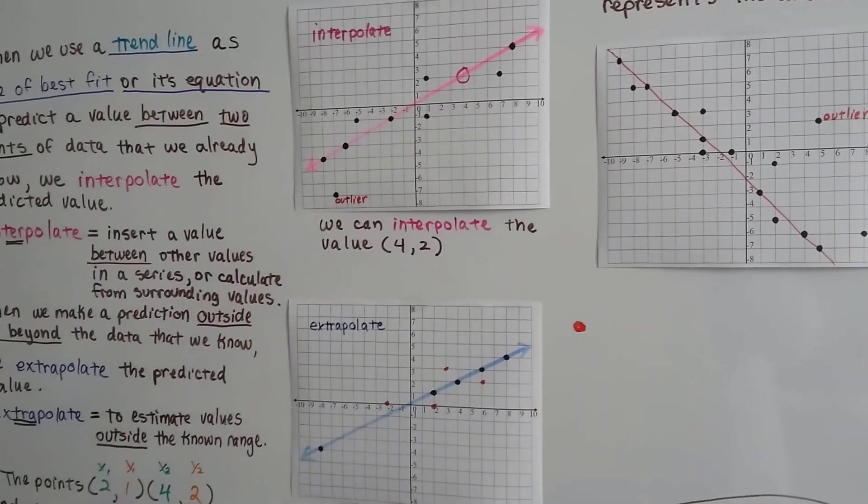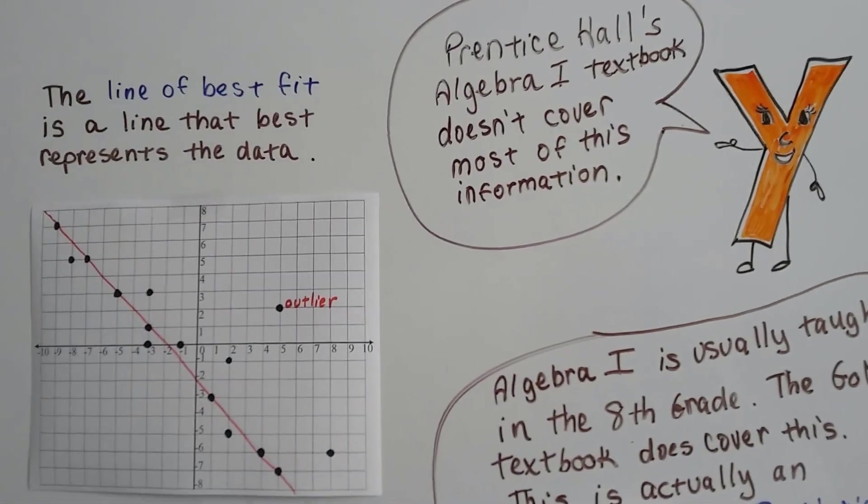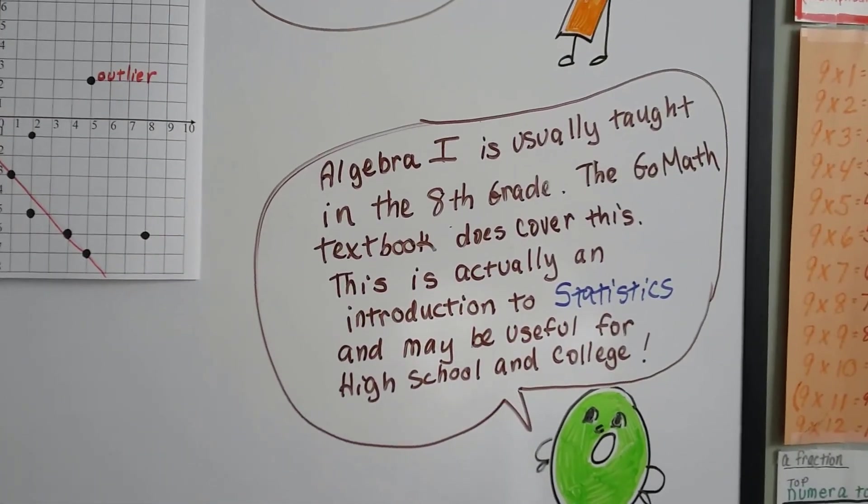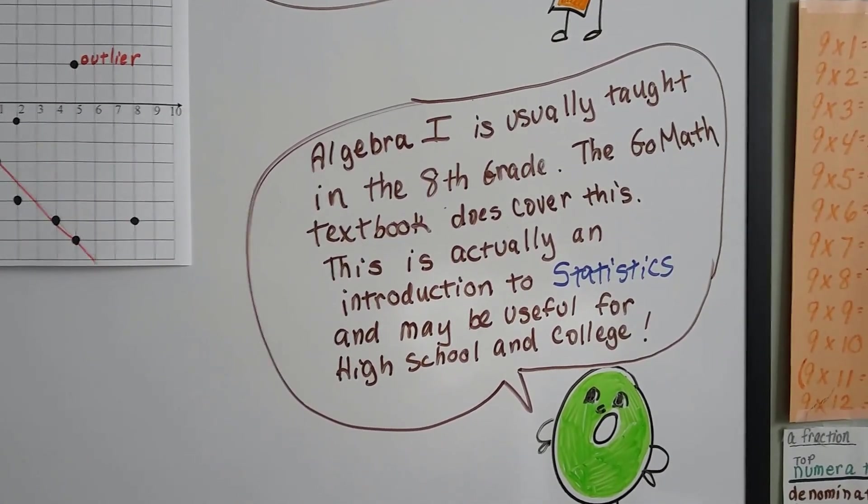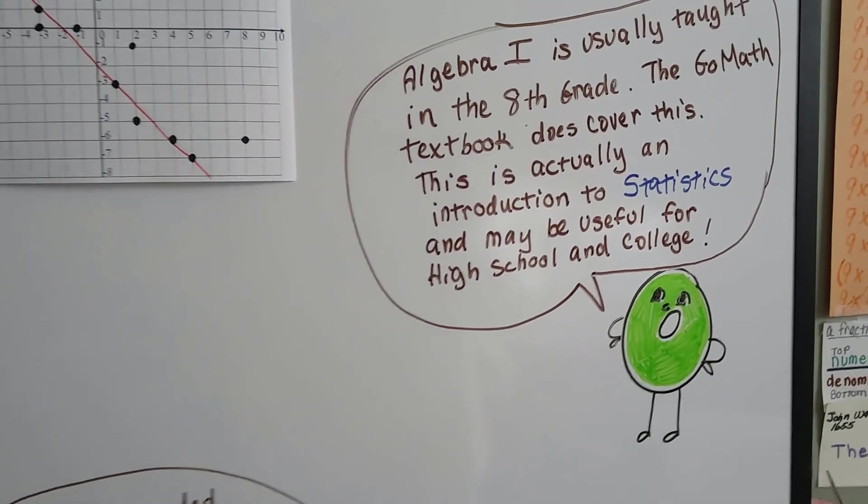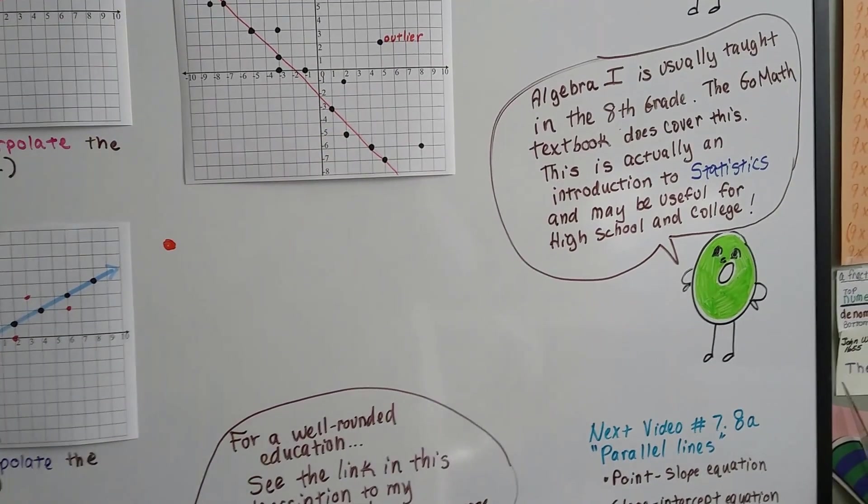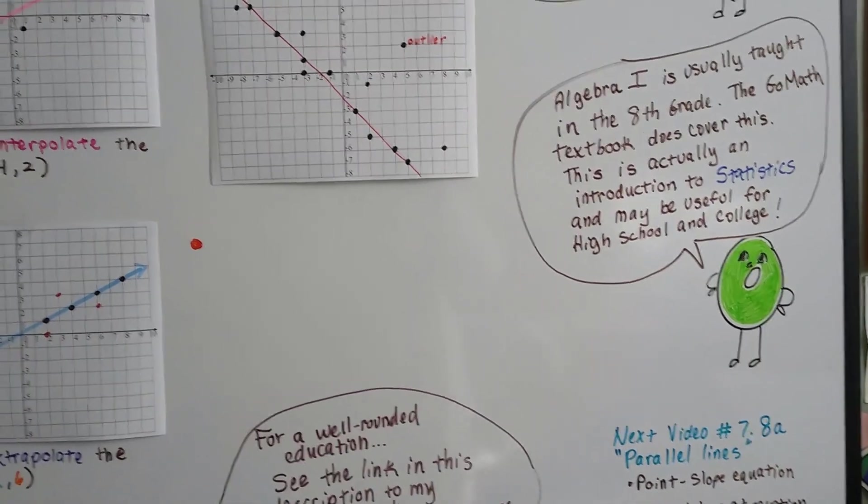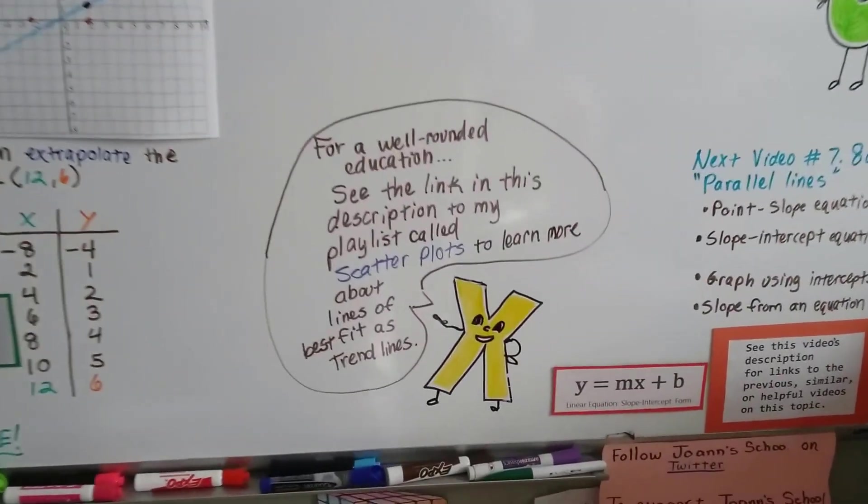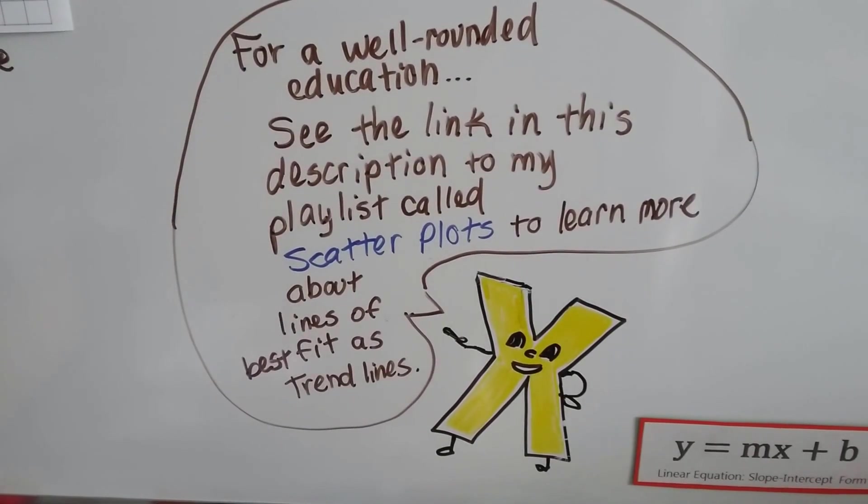Now, a lot of this that I'm talking about is not really covered in the Algebra 1 textbook that I've been using, but that's the Prentice Hall Algebra 1 textbook. It doesn't cover most of this information. It talks to you like you're a baby and says the line of best fit. And it doesn't call it a trend line, which is its correct term. Algebra 1 is usually taught in the 8th grade. And the GoMath 8th grade textbook does cover this. It's at a higher level. It's a better textbook. And this is actually an introduction to statistics and may be useful for high school and college. So the way that lessons are taught in school is they first teach you a basic lesson about it, and then the next year you learn a little bit more about it, and the next year you learn a little bit more about it. So it's layered. So it's really important that if you've never heard of outliers or scatter plots or clusters or interpolate, trend line, extrapolate, it might be good if you want a well-rounded education to see the link in this description to my playlist called Scatter Plots. And there's not that many in there. You could watch every single video in under an hour. It's not a long playlist. And then you'll learn more about lines of best fit and trend lines, and you'll have a better education.